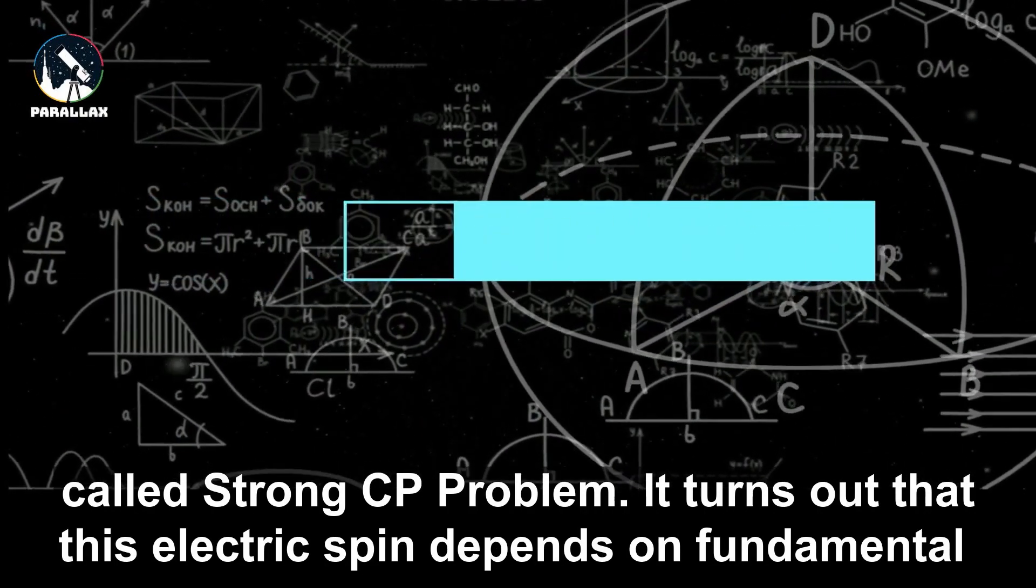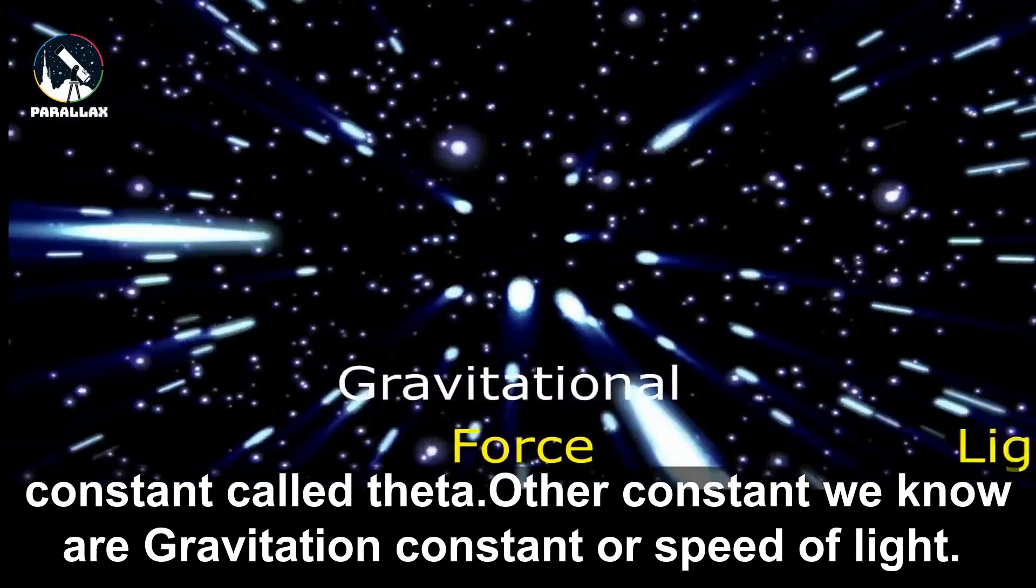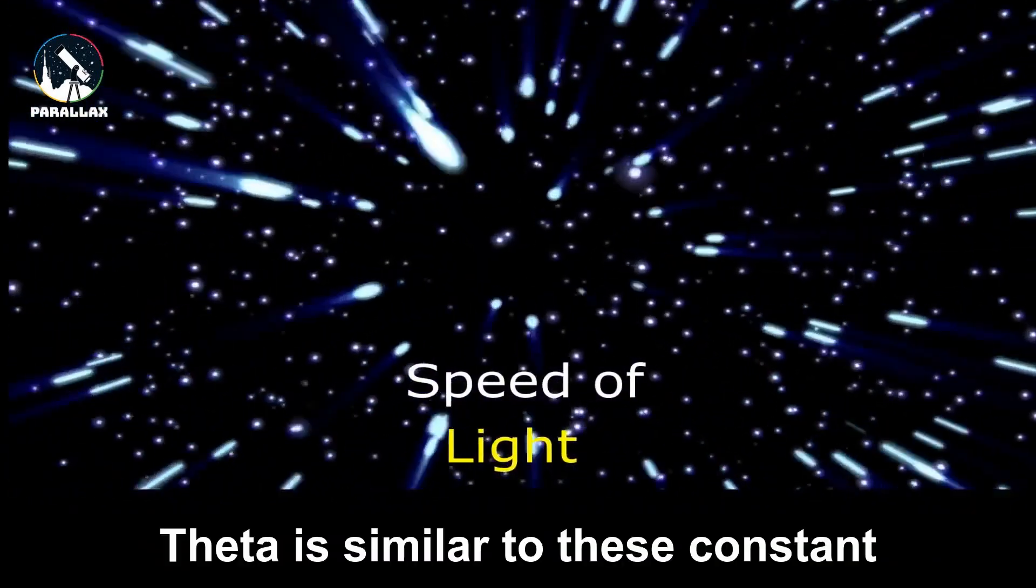It turns out that this electric spin depends on a fundamental constant called theta. Other constants we know are the gravitational constant or speed of light. Theta is similar to these constants.